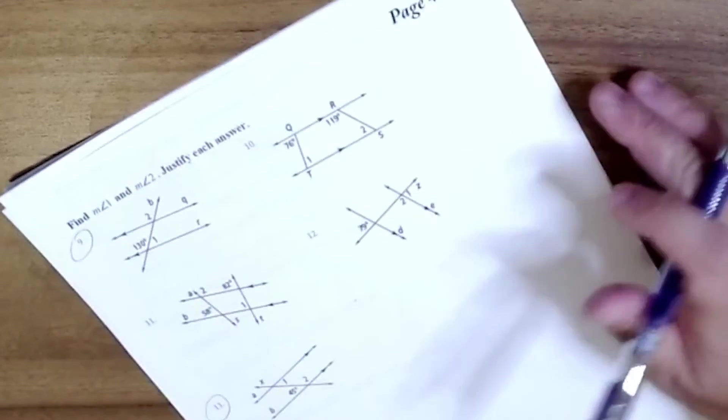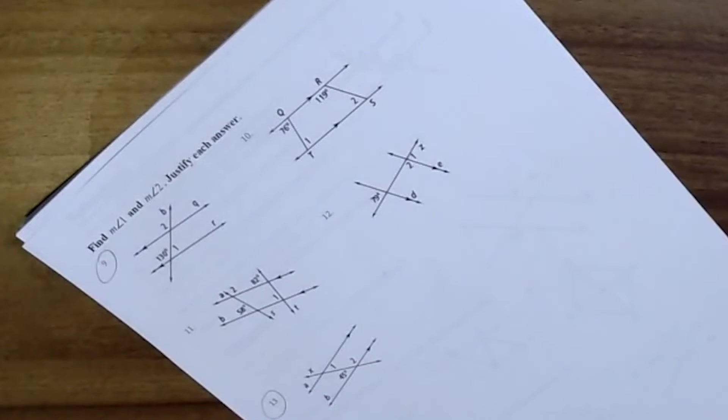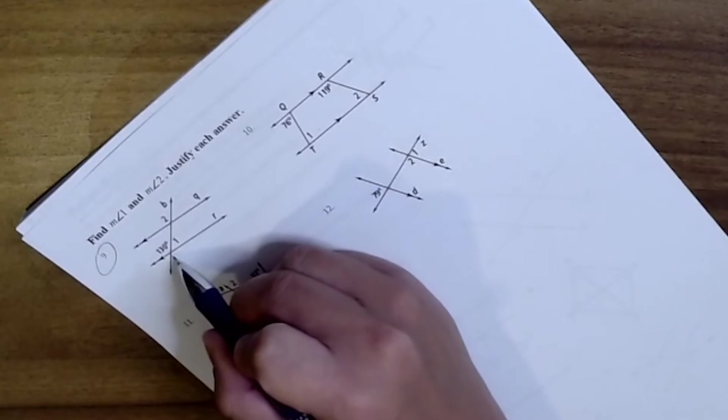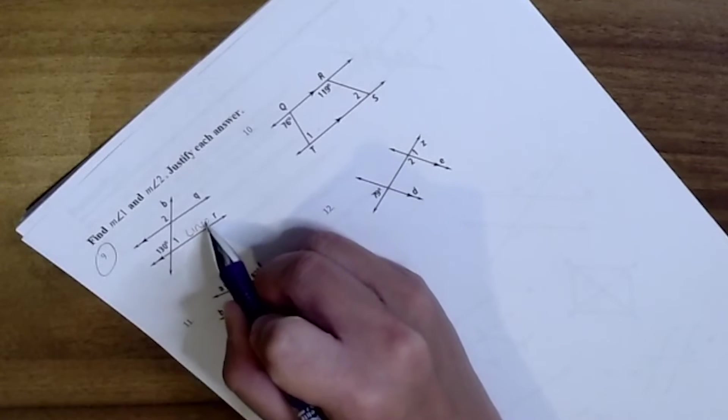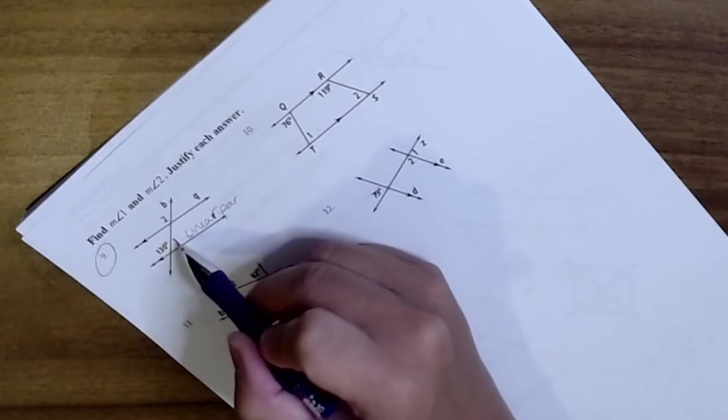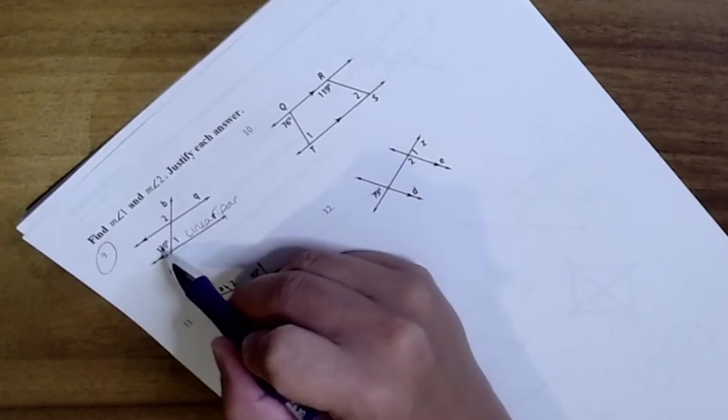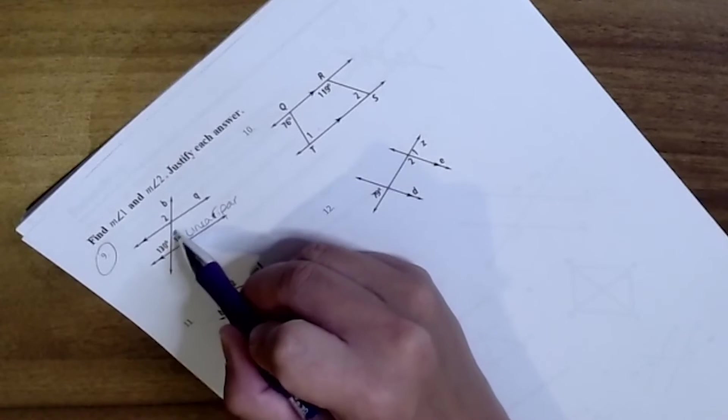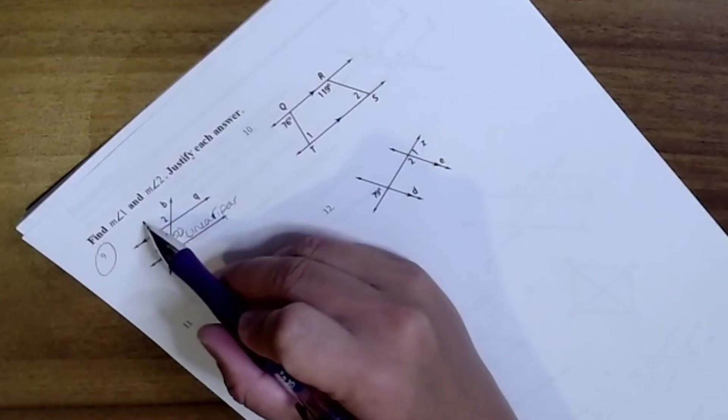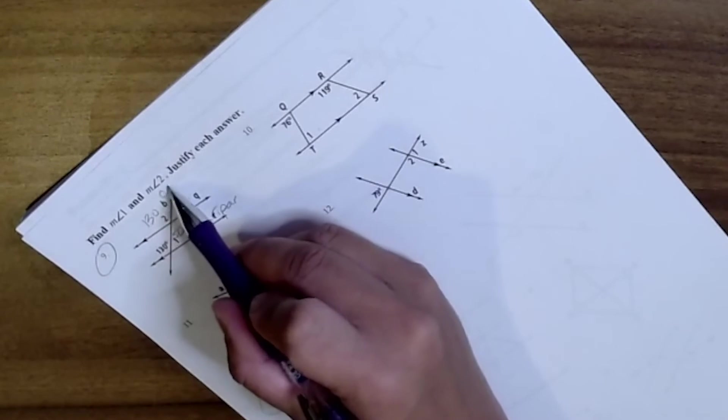Alright. So now, angle 1 and angle 2 is what we're trying to find. 1 and 130 are linear pair. So linear pair makes 180 degrees, so 130 minus 180 is 50. And then angle 2 is 130 because they're corresponding.